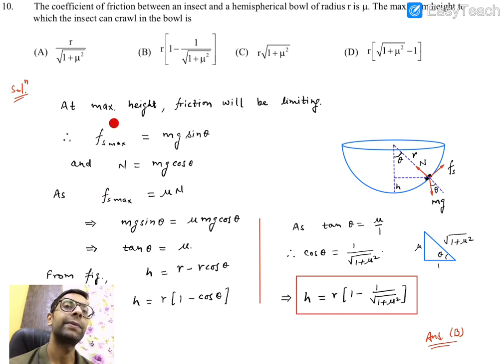We have merged these equations. We put fs value which is mg sin theta equals mu times N equals mu mg cos theta. If mg cancels, sin theta by cos theta gives tan theta equals mu. So tan theta's value is mu.